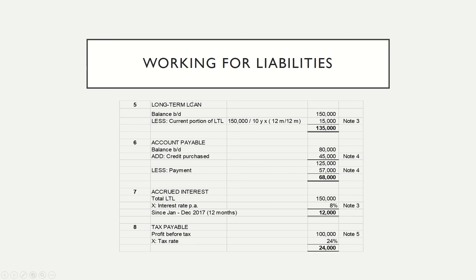Working 5 is for the long-term loan. The balance brought forward as at 1st January 2017 was RM150,000, but you need to deduct the current portion of the long-term loan maturing in 2017 — which covers 12 months or 1 year. The current portion is RM150,000 divided by 10 years times 1 year, equal to RM15,000.